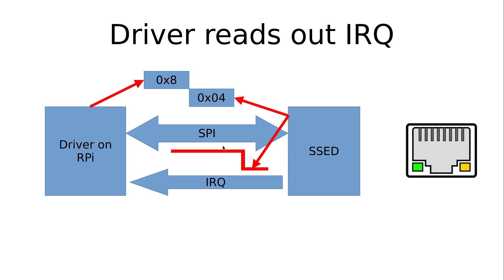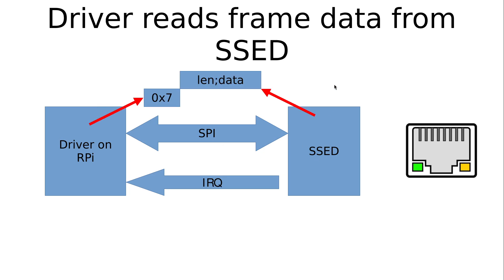Our driver now knows a frame was received and needs to read it out. To do so, the driver will write out SBI command 7, which is the receive frame command. The SET device will send out the length of the received frame as 2 bytes, and then that many data bytes containing the frame data — all transferred over SBI.